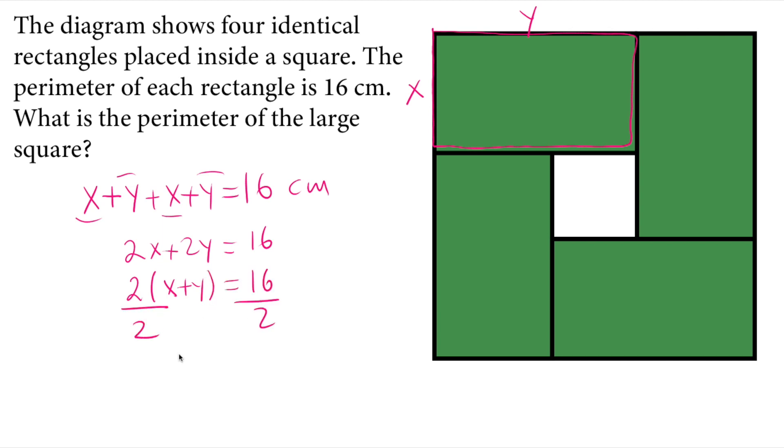We divide each side by 2 and get x plus y equals 8. This is important information. We can see that the side length of the square consists of one short side length and one long side length, x plus y.